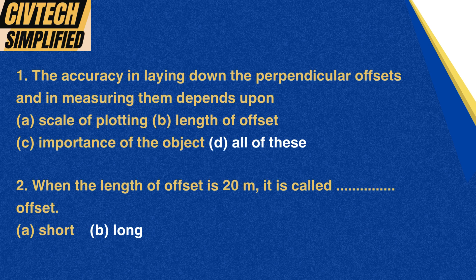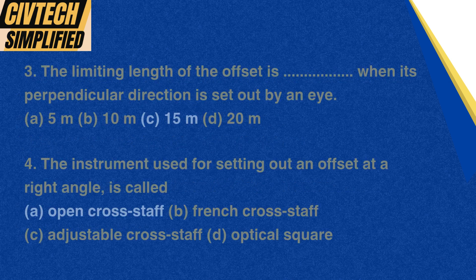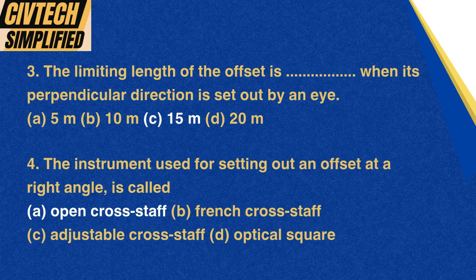Question 2: When the length of offset is 20 meters, it is called: A. Short, B. Long. Correct option: B. Long. Question 3: The limiting length of the offset is — when its perpendicular direction is set out by eye: A. 5 meters, B. 10 meters, C. 15 meters, D. 20 meters. Correct option: C. 15 meters.